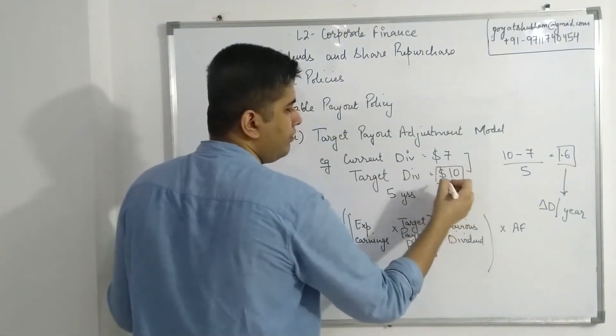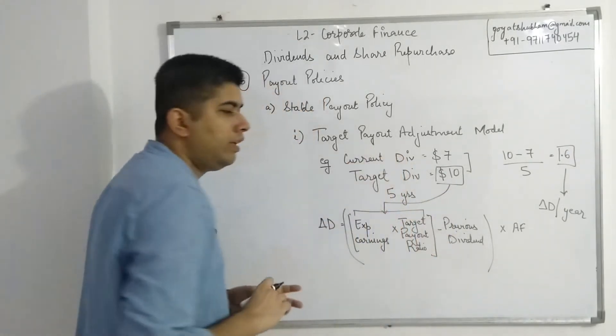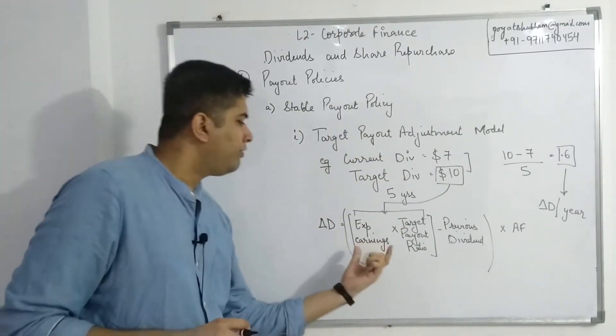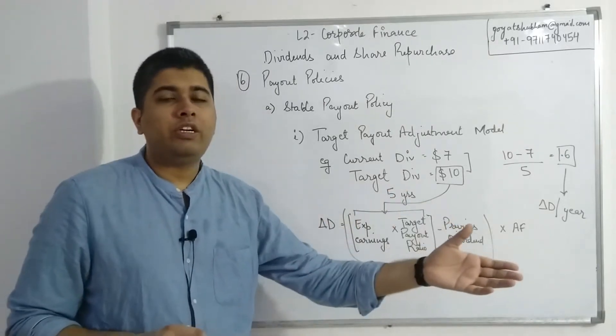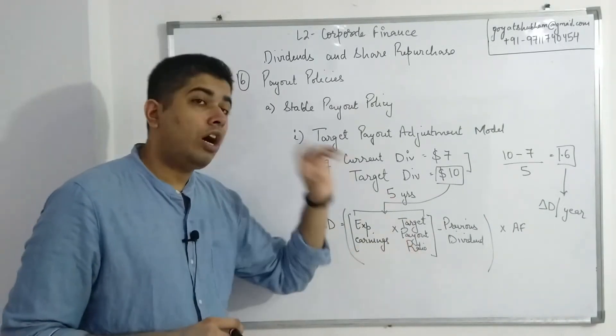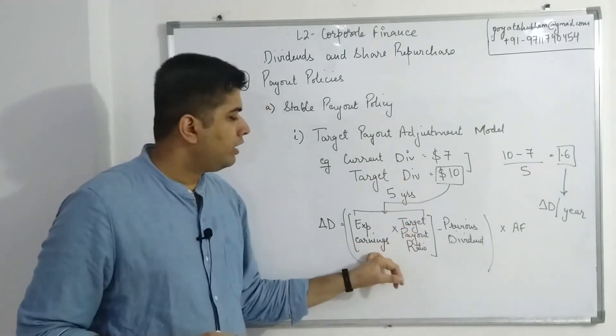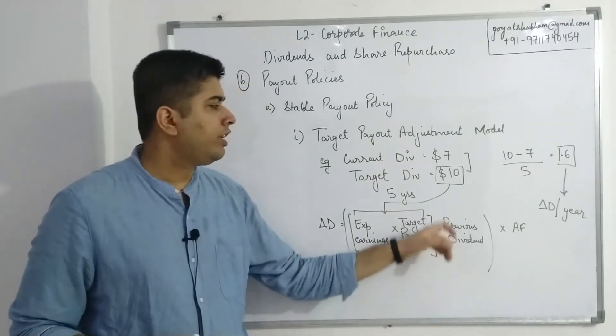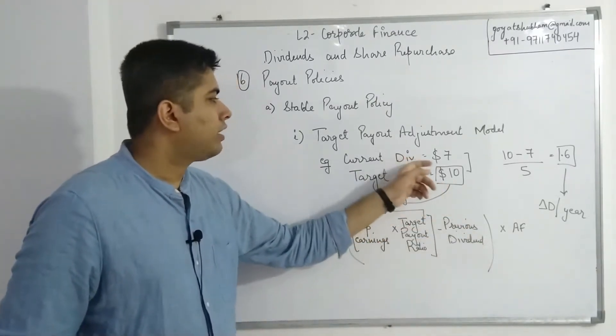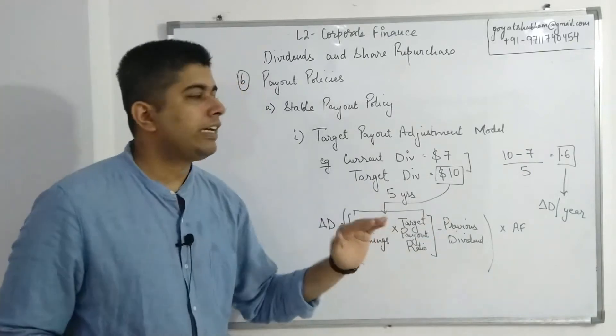This $10 is this entire part. Whatever the future dividend I am deciding, that would be based on what my future earnings are and how much of those future earnings do I expect to pay out to my shareholders as dividends. So expected earnings times target payout ratio - it's not the current payout ratio, it's the target one that we are using here. So expected earnings and target payout ratio will give me the target dividend for the future, and then subtracting previous dividend, the current dividend of 7, which we have done here. So this part is exactly the same.